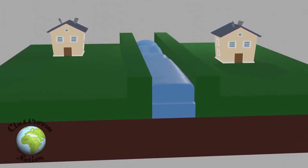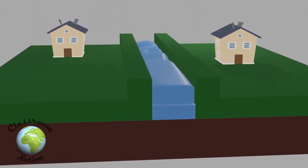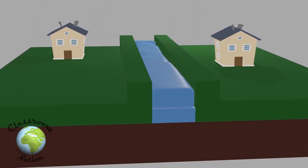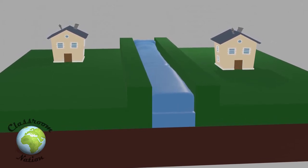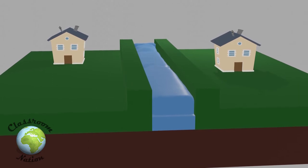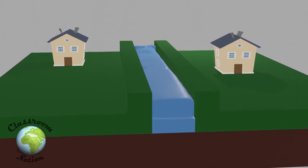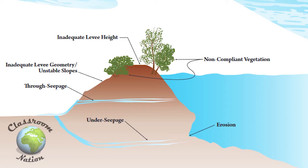Levees are not always successful and can be breached if the water becomes too high or if erosion damages the foundations of the levee, weakening it until it breaks. Seepage can also cause the levee to fail — if water seeps into the levee, it can flow through and pull it down.